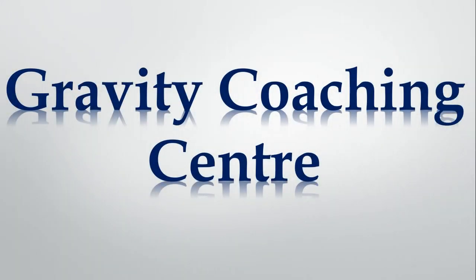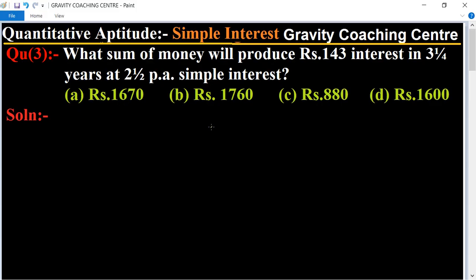Welcome to our Channel Gravity Coaching Center. Quantitative aptitude chapter simple interest, question number three. What sum of money will produce rupees 143 interest in three and one-fourth years at two and one-half per annum simple interest?